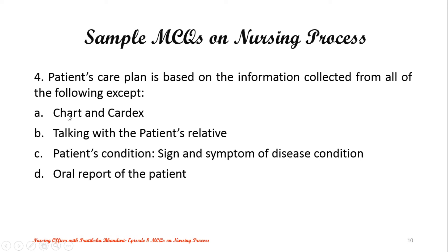The information sources include charts and Cardex, patient condition, and signs and symptoms of the disease condition. The correct answer is Option B — talking with the patient's relative. That is, we cannot collect information just by talking with the patient's relative. We need to discuss signs and symptoms regarding the disease condition.